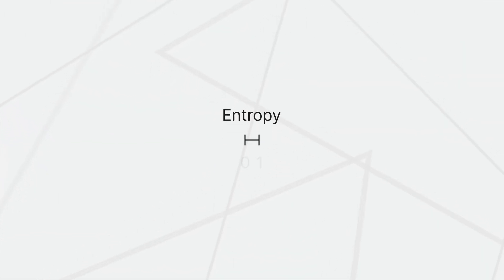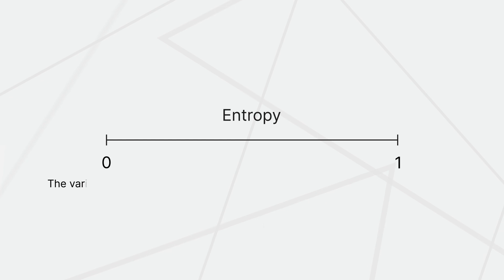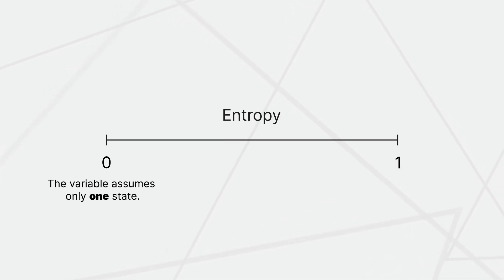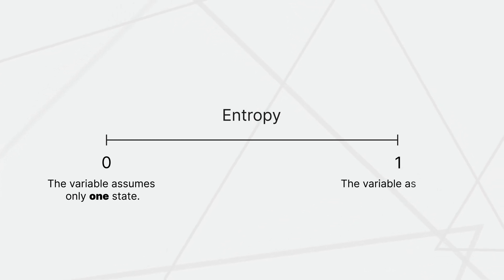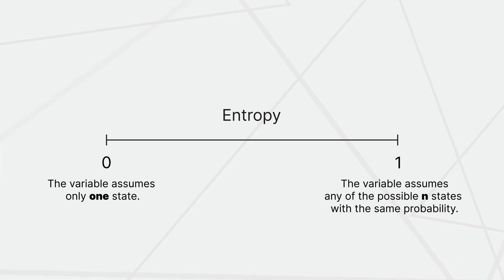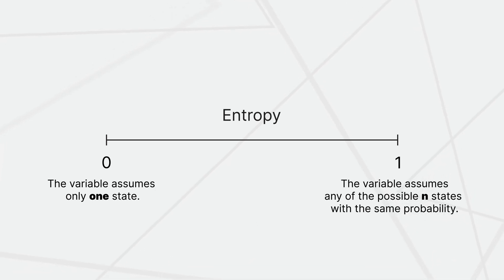Entropy ranges between 0 and 1. When the variable assumes only one state, the entropy is 0. When the variable assumes any of the possible states with the same probability, then the entropy is 1.